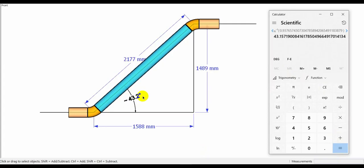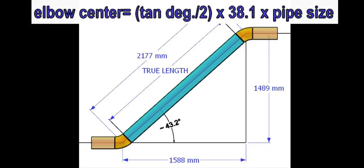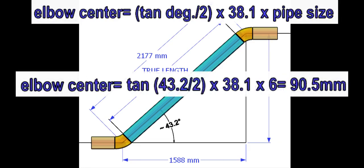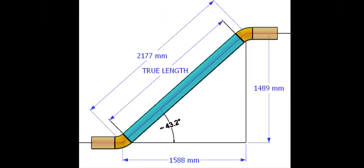Now we need to calculate the elbow center to determine the true length of the pipe. Assume the pipe size is 6 inches. The elbow center formula is degree tan divided by 2 into 38.1 into pipe size in inches. The elbow center is 90.5 mm.